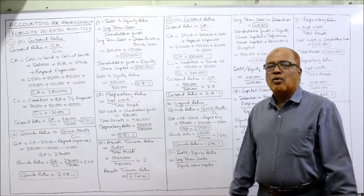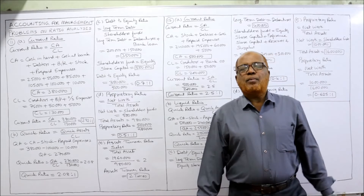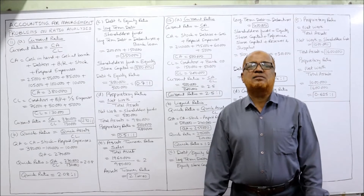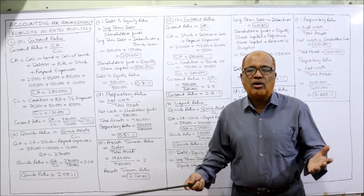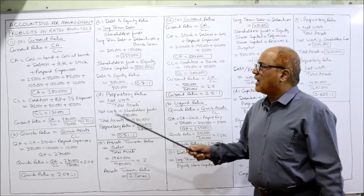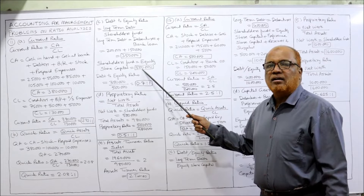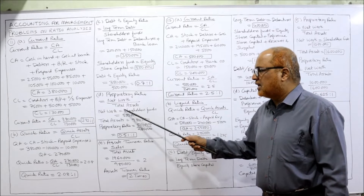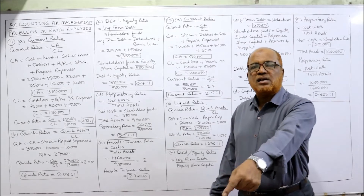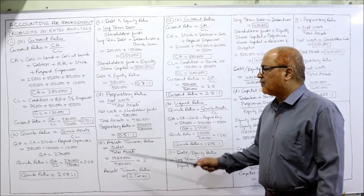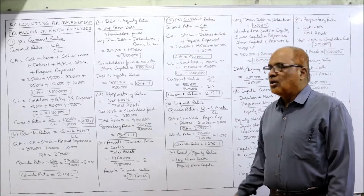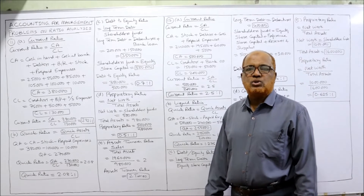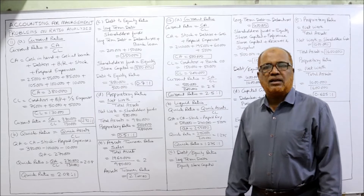Next is proprietary ratio. The formula is net worth divided by total assets. Net worth means shareholders fund, which we already calculated as 5 lakh. Total assets are given in the problem as 9 lakh 80,000. So 5 lakh divided by 9 lakh 80,000 equals 0.51 is to 1. That is the proprietary ratio.